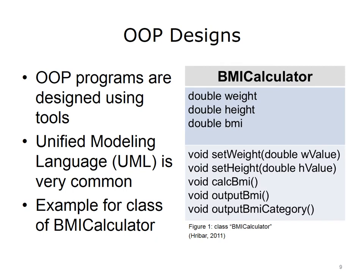OOP programs are often designed using tools such as Unified Modeling Language, or UML. A UML diagram gives the basics about the class — the name, the attributes, also known as instance variables, and the methods. This is very useful when building a design with all the classes in a program. It gives a snapshot of how the different classes are related and what they do.